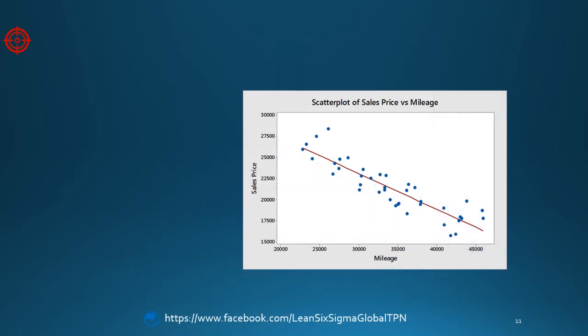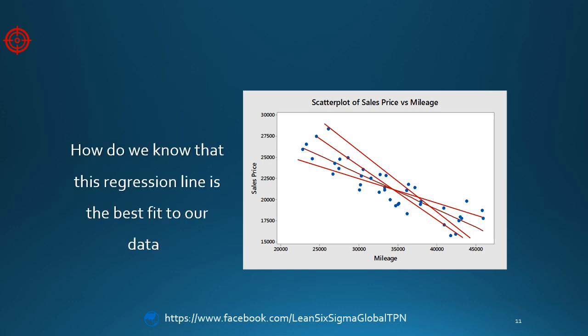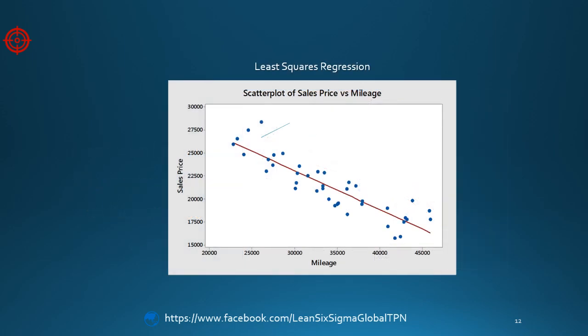How exactly did we arrive at our regression line? How do we know it's this line instead of this line or this line? How do we find the line that best fits the data? Regression uses a method called least squares.